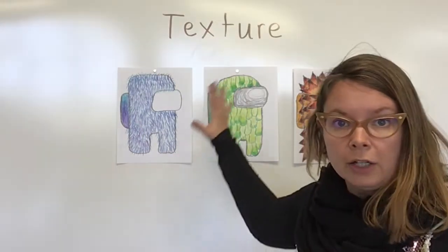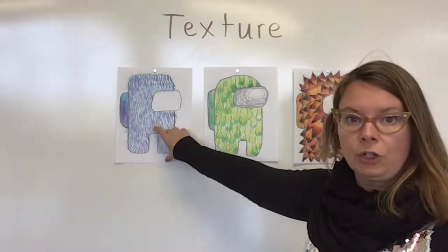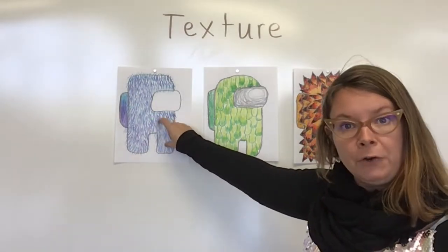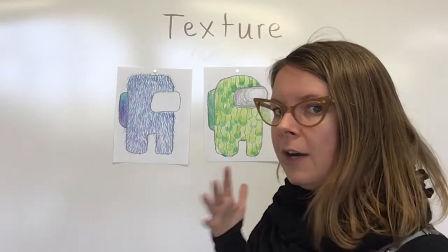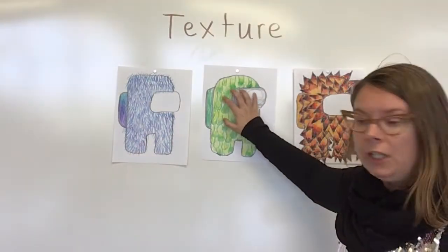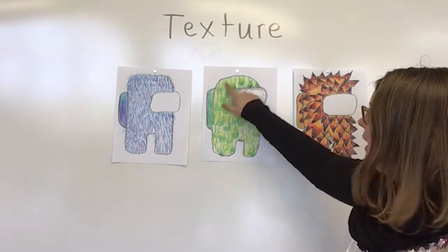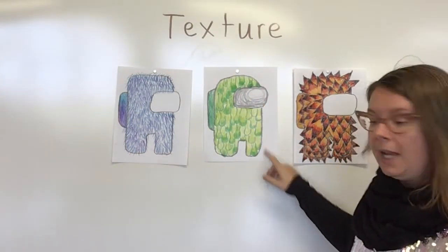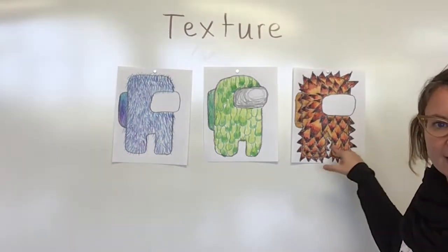Instead of being just a single color and smooth, we are going to give them texture. The first texture I'm going to show you is fur — we're trying to create the look of fur, which is what we do in art. The second texture is slime — this guy looks like he just stepped out of a bucket of slime, all dripping and oozing off of him. The third texture is pointy and sharp, like this thing is covered in thorns.